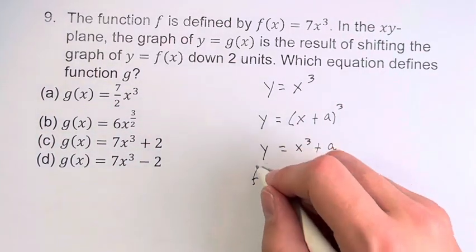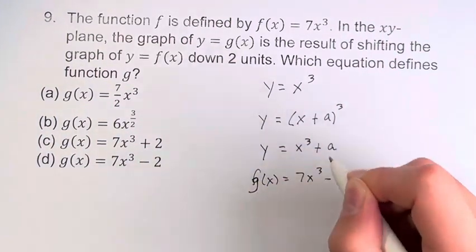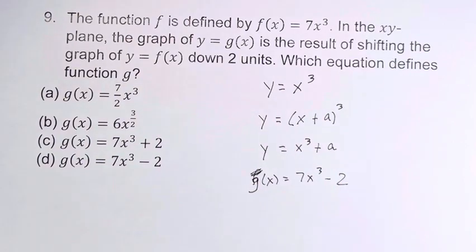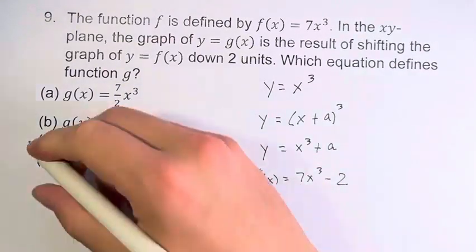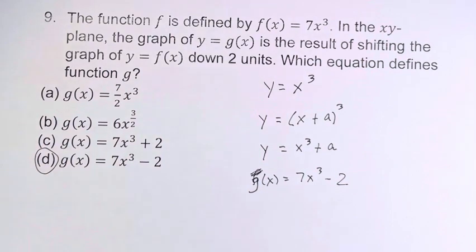Therefore, our equation, this is not actually f of x, this is g of x. g of x is equal to 7x cubed minus two. D is your final answer.